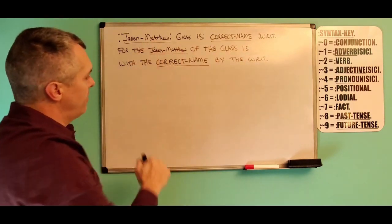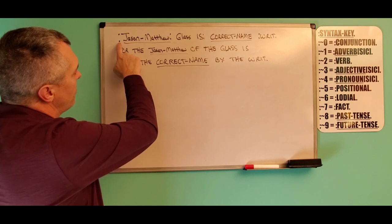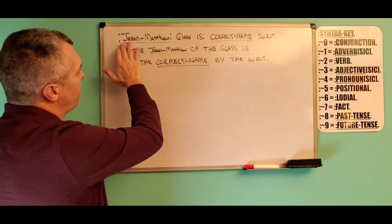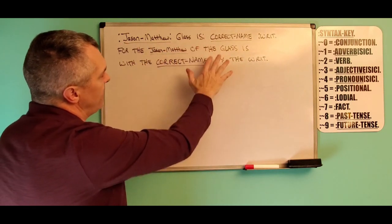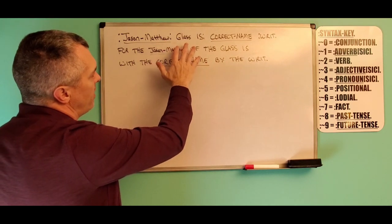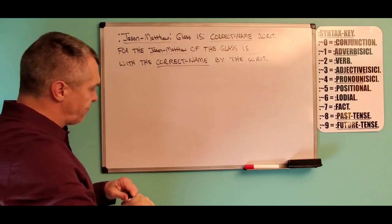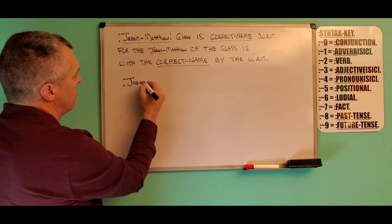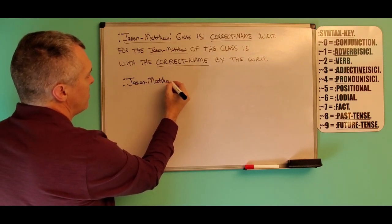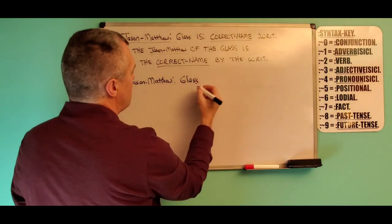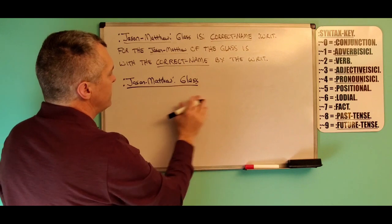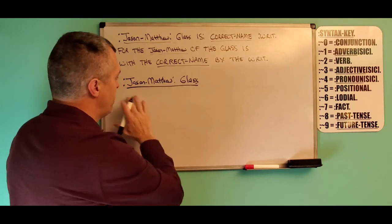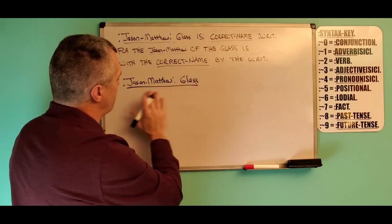Same thing here with my full name — I want that to be taken as one. I don't want it to look like 'for the Jason hyphen Matthew of the glass is' and then have a concern added after that. The way to handle that is to take the name and underline the whole thing, because we underline things to show that they are to be taken as a whole.